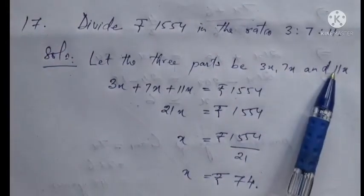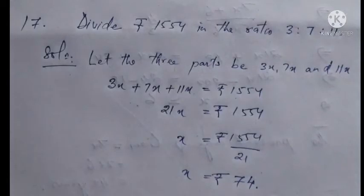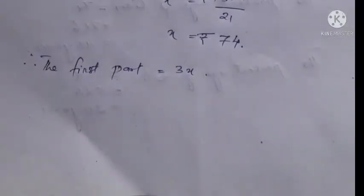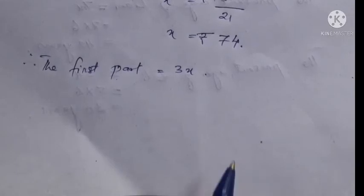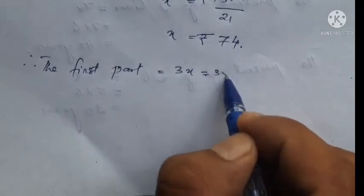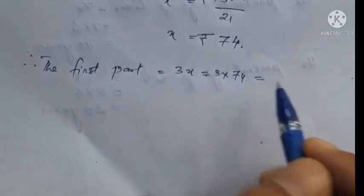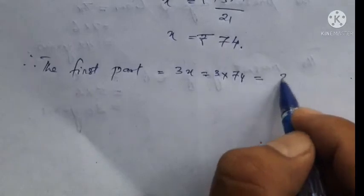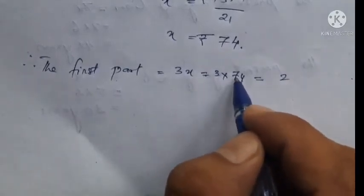Now we find each part. Since x is 74, the first part is 3x, which is 3 times 74. 3 times 4 is 12, and 3 times 70 is 210, giving 222 rupees.